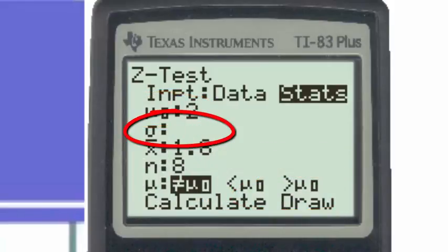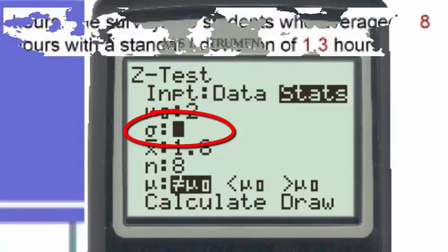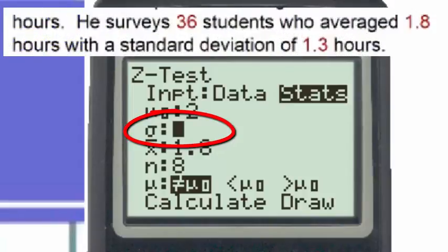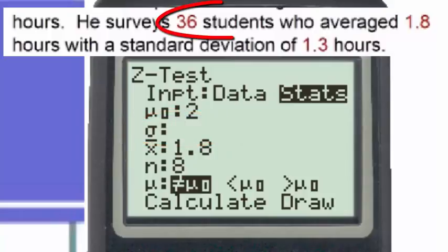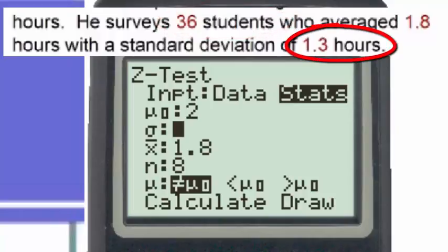Sigma is the population standard deviation, and although we're not told the population standard deviation in this problem, we do have a sample of more than 30 students. So therefore, the standard deviation of the sample, which is 1.3, can be used as a good approximation of the standard deviation for the entire population.